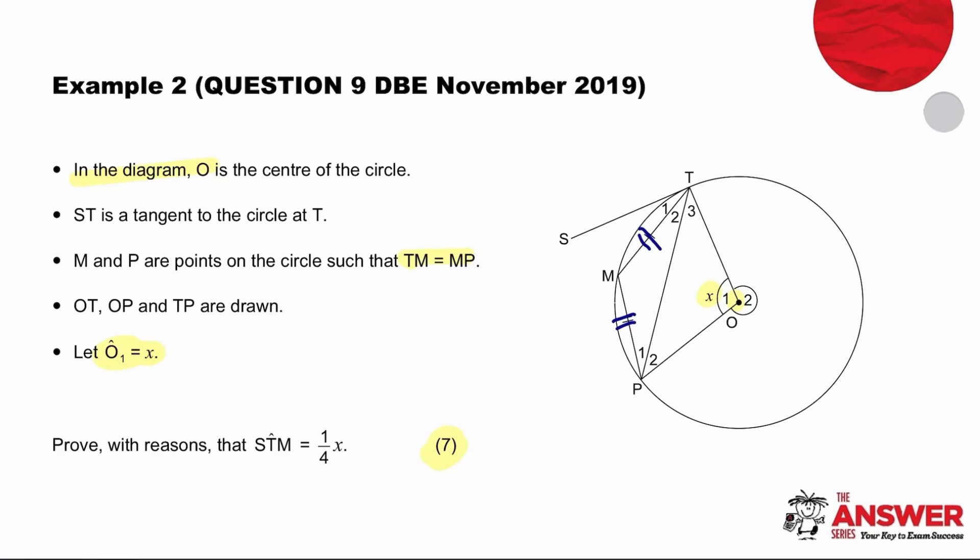All right, what we haven't really done is process what is it that we need to find. So before we go any further, we need to take this angle. We need to think about where it is, and we need to think about how we're going to use it. So angle STM is sandwiched between a tangent and a chord. And that means that we're probably going to use the tan chord theorem. So if we join the tangent up to the chord and then the chord to the circle, we can see that the relationship which we are most likely to use is the relationship between angle T1 and angle P1 because they are in fact equal.